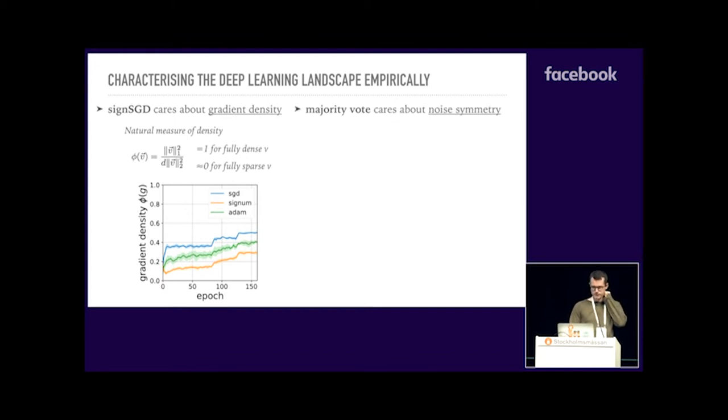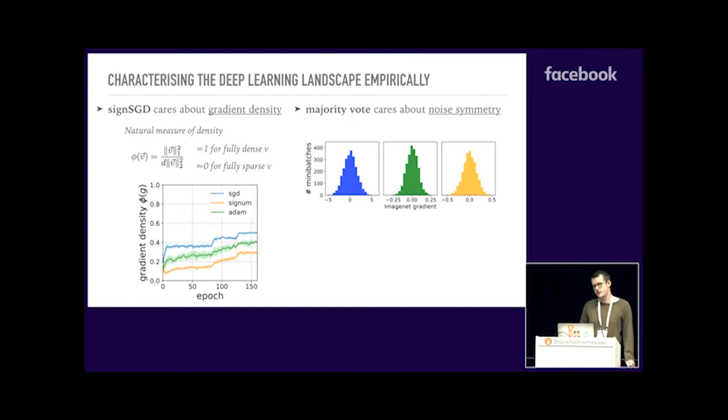What about noise symmetry, which majority vote cares about? Here we measure it on ImageNet. In the paper, there's also the CIFAR results. And you can see that for three randomly chosen weights, the noise distribution of the stochastic gradient basically looks Gaussian, as expected by central limit theorem. This is a mini-batch size of 256. So this slide is saying that gradients are dense, noise is symmetric. We expect that sign-based optimizers should work well.